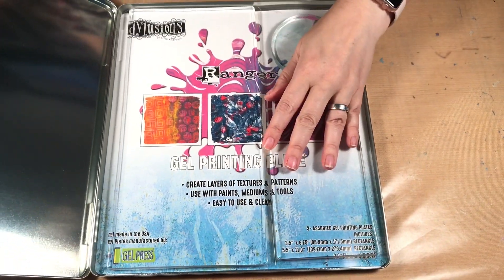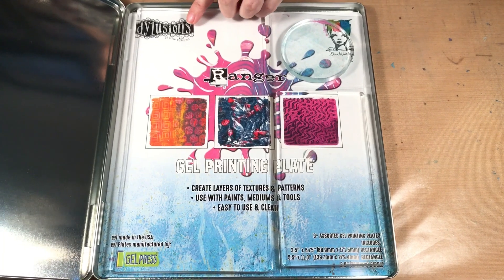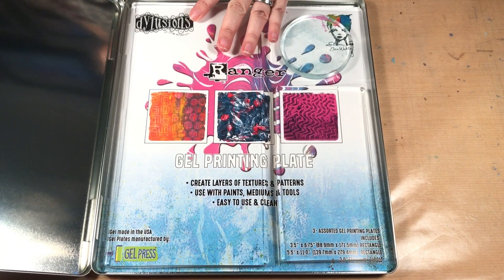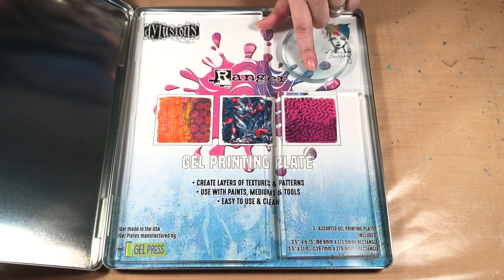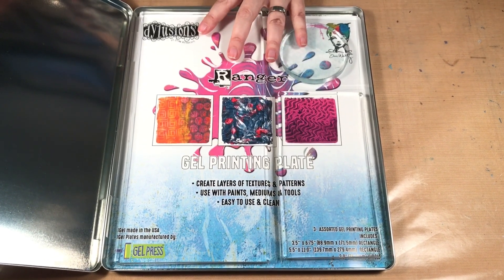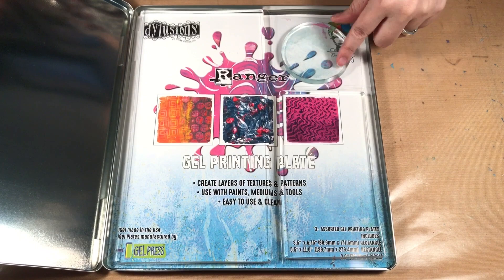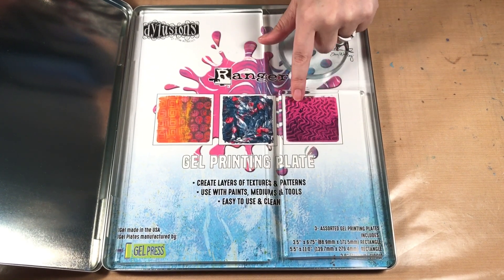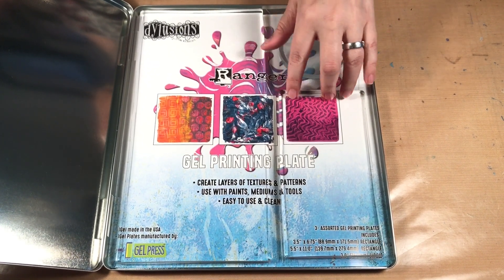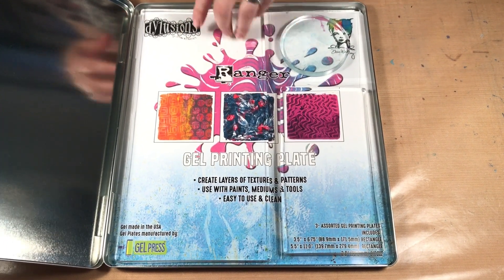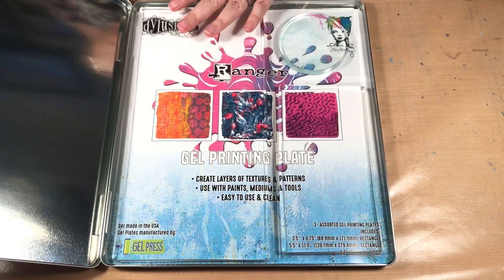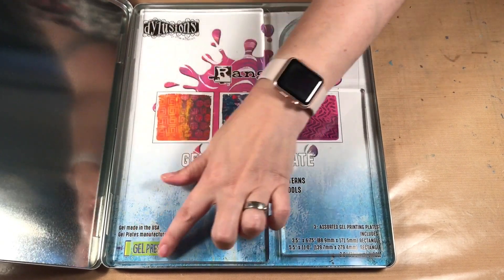Ranger with Diane Reaveley and Dina Wakley partnered with Gel Press to come up with two gel press sets. This set here includes a three inch circle, a three and a half by six and three quarter inch rectangle, and then a five and a half by eleven inch large rectangle.